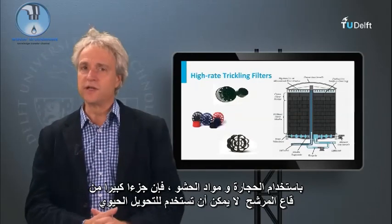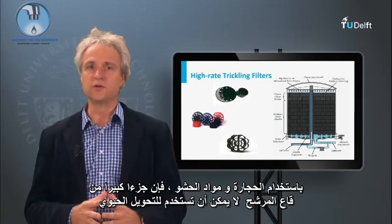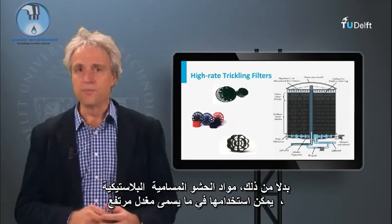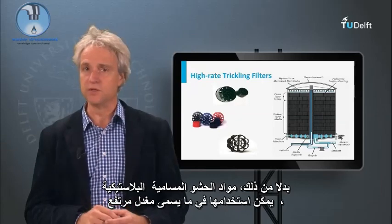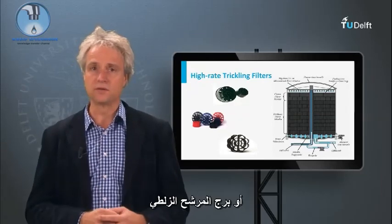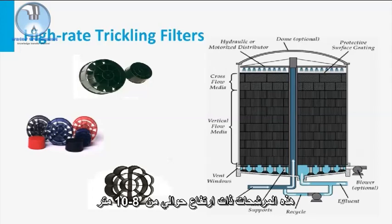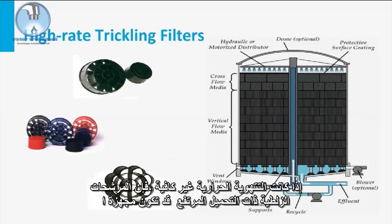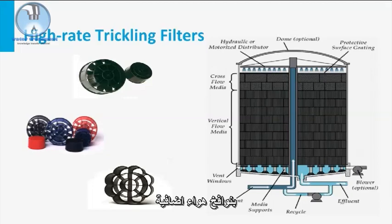By using stones as filling material, a large part of the filter bed cannot be used for bioconversion. Alternatively, very porous plastic packing material can be used in the so-called high-rate or tower trickling filter. These filters have a height of about 8 to 10 meters. Since the bioconversion rate is much higher, oxygen supply is much more critical in these filters. If convective aeration is non-sufficient, high-rate trickling filters might be equipped with additional blowers.